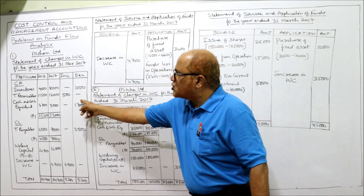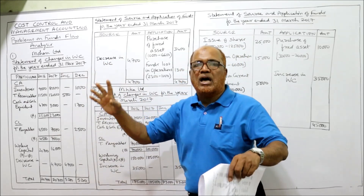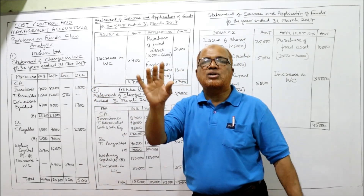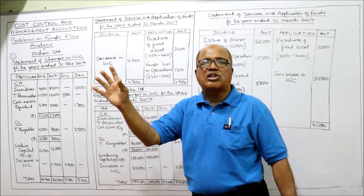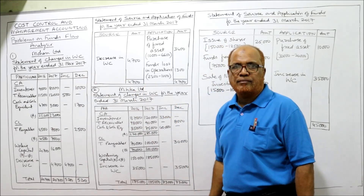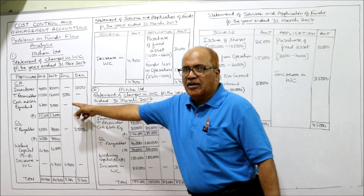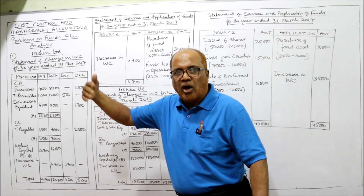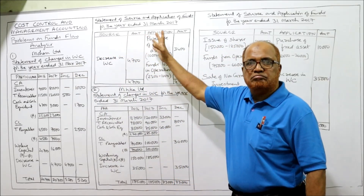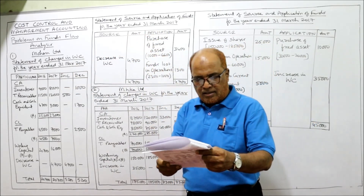These two statements combined together constitute the funds flow statement. Current accounts go in working capital; non-current accounts go in source and application. That's it — it's clear now.